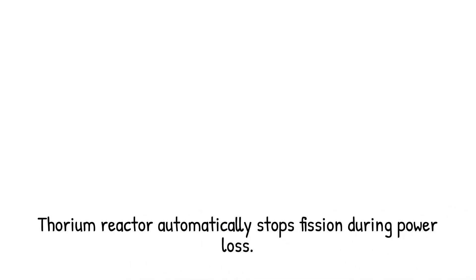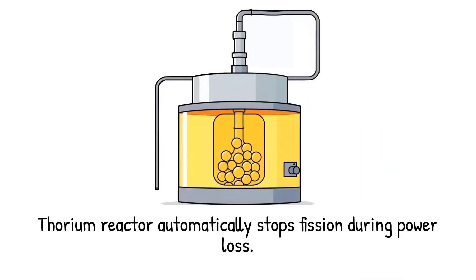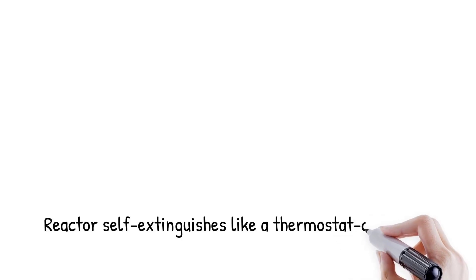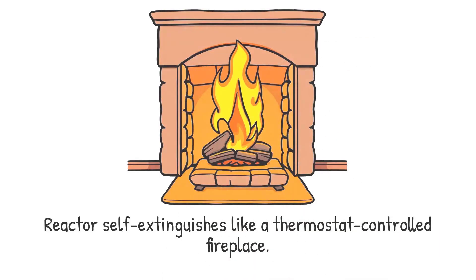For example, if power is lost, a molten salt thorium reactor can automatically drain its fuel, stopping fission without human intervention. Analogy: it's like building a fireplace, where the fire extinguishes itself if it gets too hot.